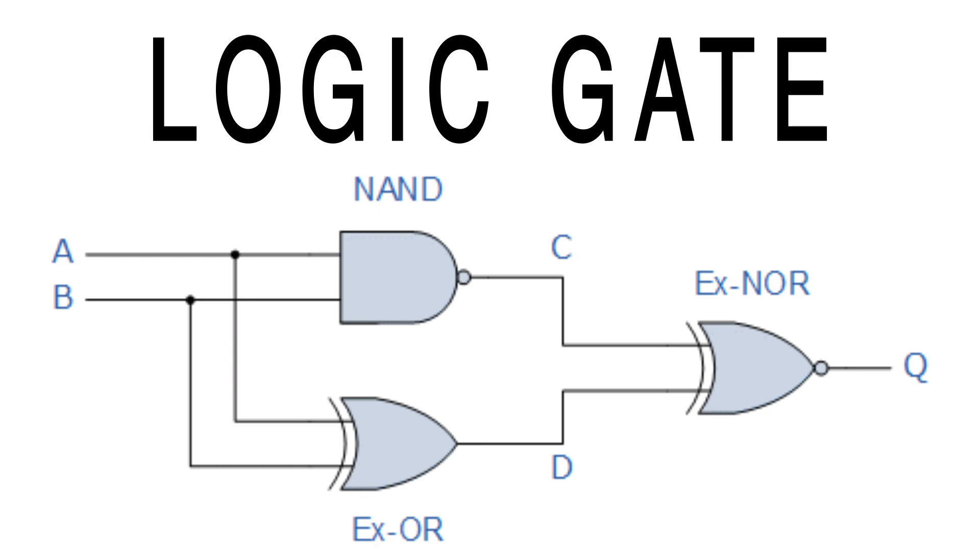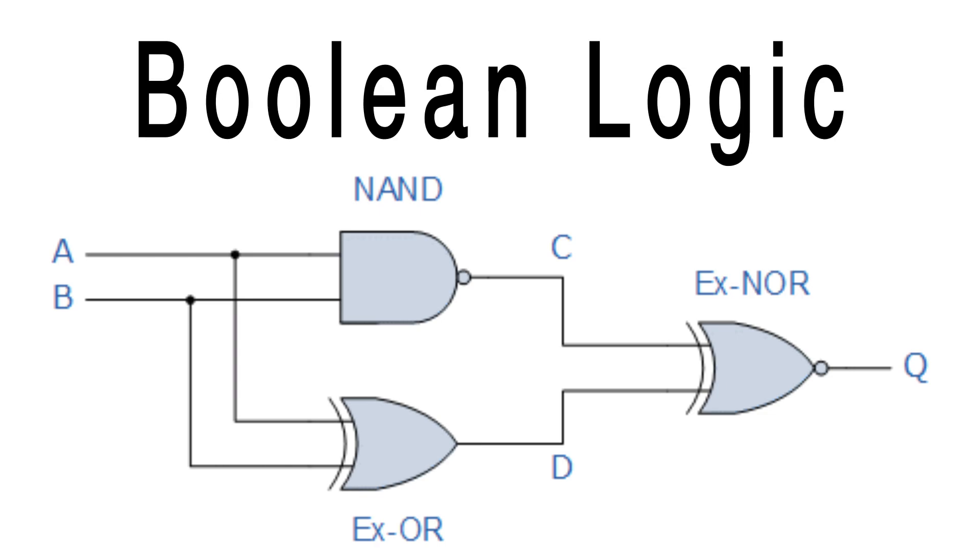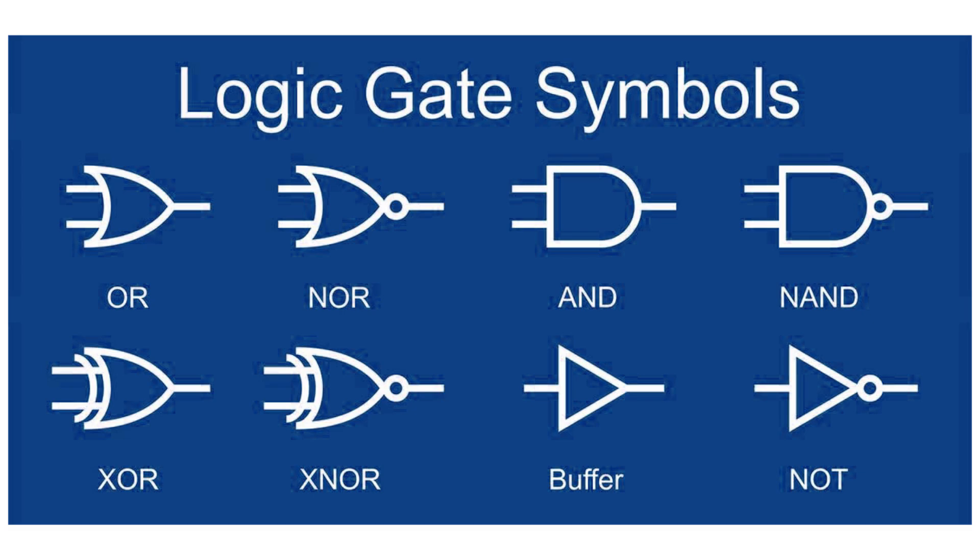I've had several videos on this channel about how computers store numbers and by extension data. But how do they do things with that data? They do it with what is known as a logic gate, the arrangement of which is referred to as Boolean logic. These are the fundamental building blocks for how computers can make decisions based on inputs.